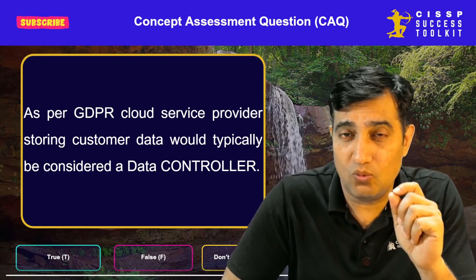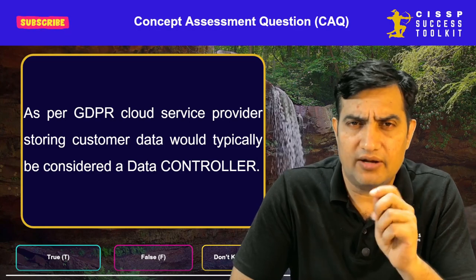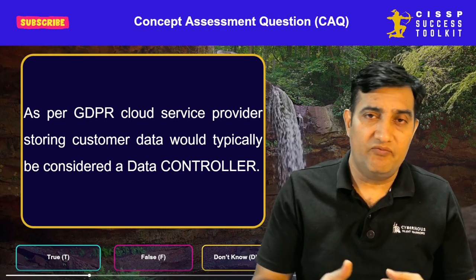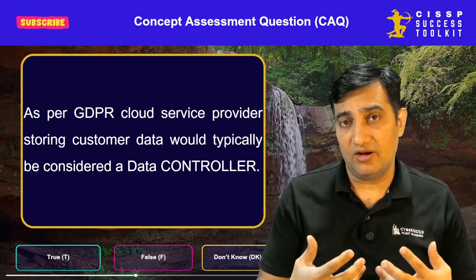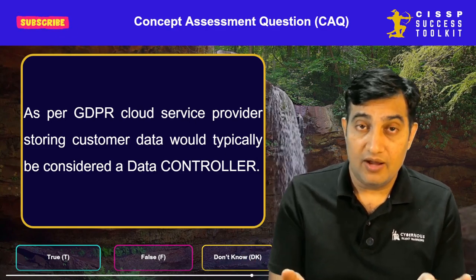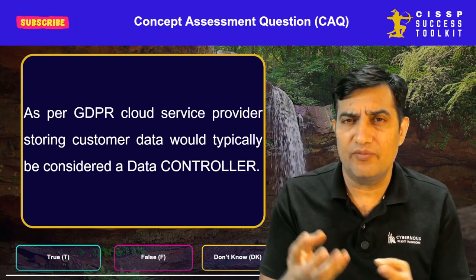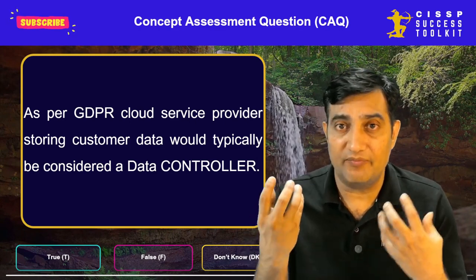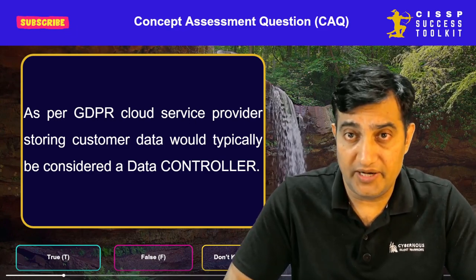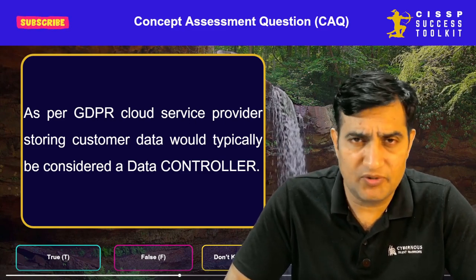We need to understand the core differences between a data controller and a data processor. You can compare the data controller with the data owner as well. The key difference is that when we talk about data owner, we are talking from an internal company or organization perspective. Whenever we ask about data controller, we are thinking from an entity perspective — which company is responsible for what. A data controller determines the purpose and the means of processing personal information.